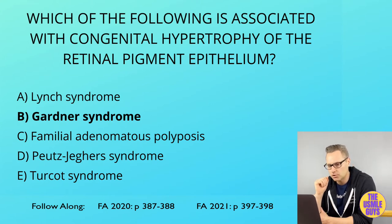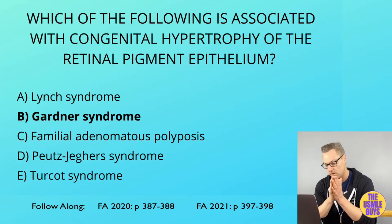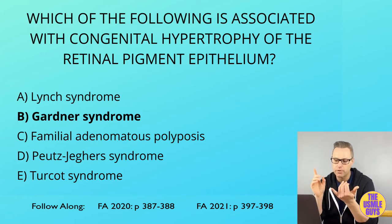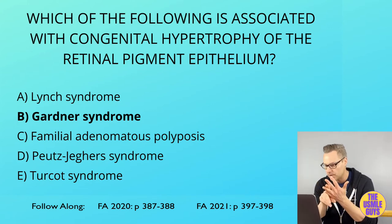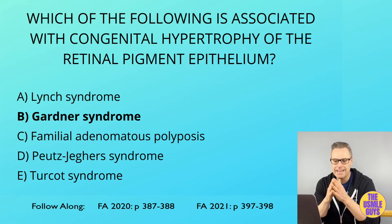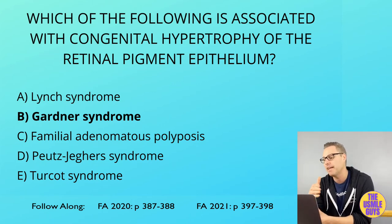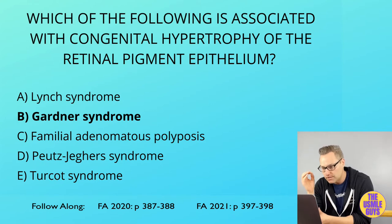Next up we have Turcot syndrome, characterized by the presence of multiple adenomatous polyps in the colon as well as an increased risk of both colorectal and brain cancer. This might be associated with FAP and/or Lynch syndrome — either a mutation in the APC gene or a mutation in one of the mismatch repair genes MLH1 and PMS2, which are associated with Lynch syndrome.